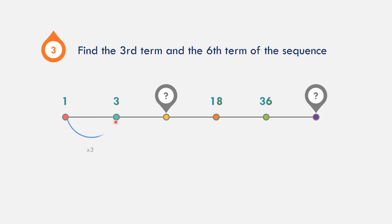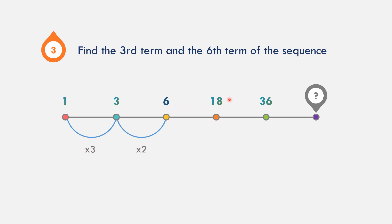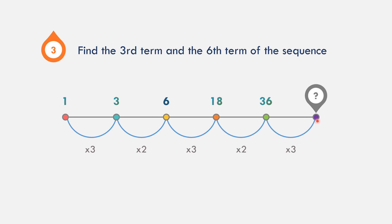1 times 3 is 3, then 3 times 2 is equal to 6. To get 18, 6 times 3 is 18. To get 36, 18 times 2 is 36. Then multiply by 3, by 2, by 3, by 2, and then by 3. So 36 times 3 is 108. The third term is 6 and the sixth term is 108.